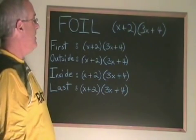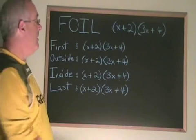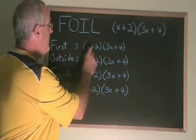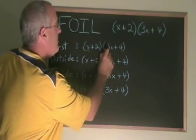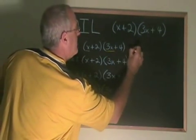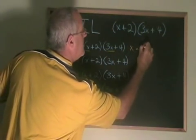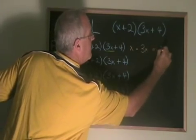The first thing to do is multiply the first terms in each binomial. The first term here is x, the first term here is 3x. x times 3x equals 3x squared.